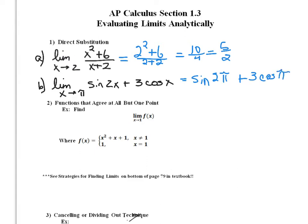Yes, we do need to know our trig values. The sine of 2pi equals 0. 3 times the cosine of pi: the cosine of pi is negative 1, so when I multiply by 3, I'm getting negative 3 there. So adding those values together, I see that this function is approaching a y value of negative 3. When I substituted pi in for x, the function value is negative 3, which tells me that on the graph there's a point at pi comma negative 3.